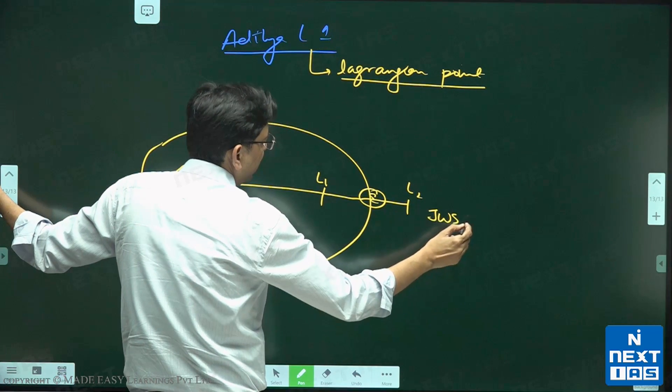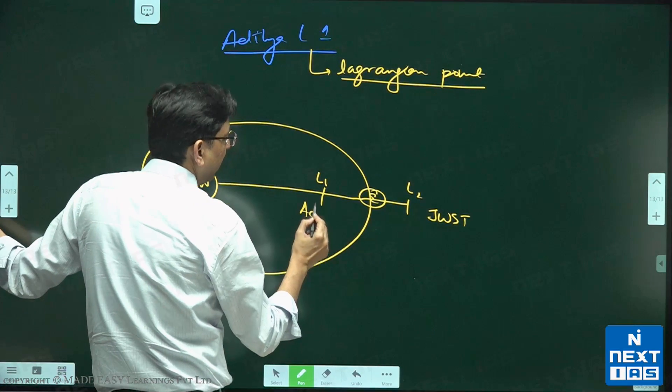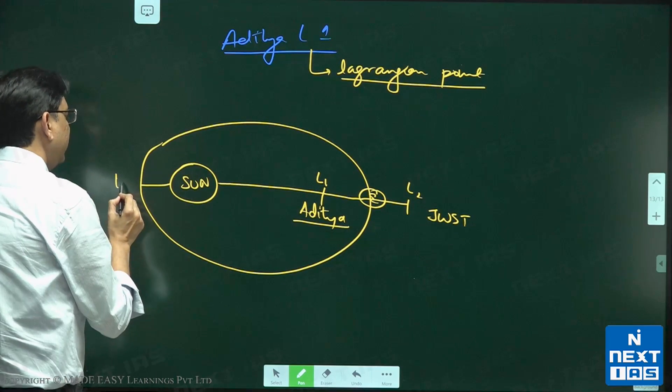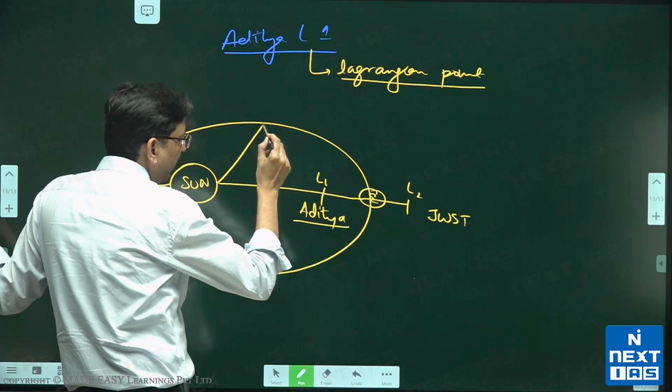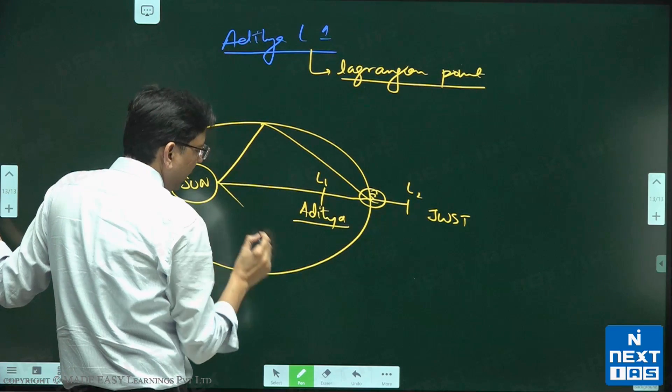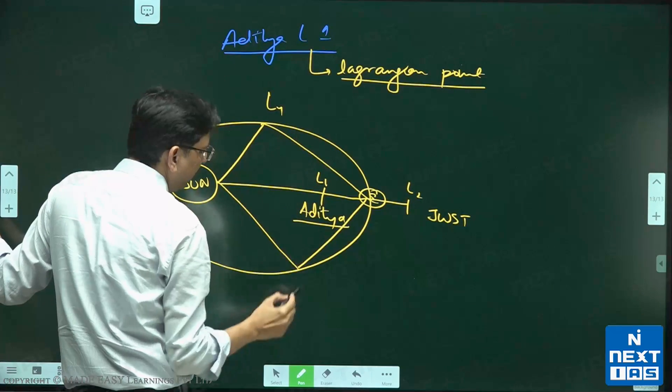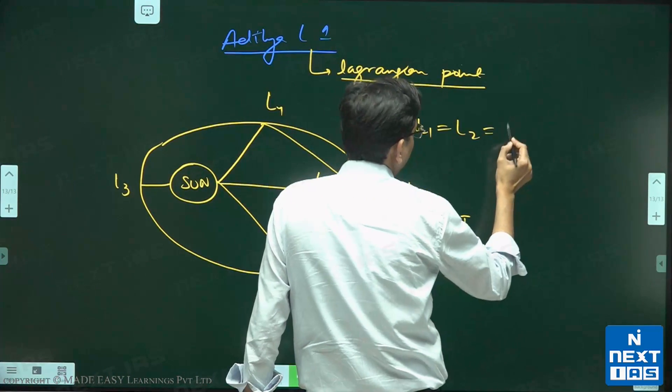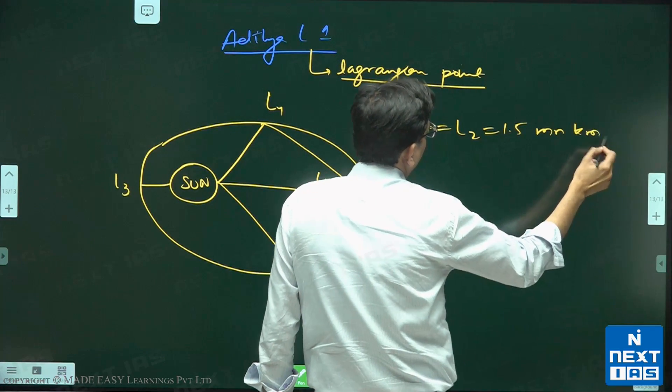where James Webb Space Telescope is. Here is Aditya, and here is L3. Then we have L4 and L5. Distance of L1 equals L2 equals 1.5 million kilometers, or 1.6 million kilometers.